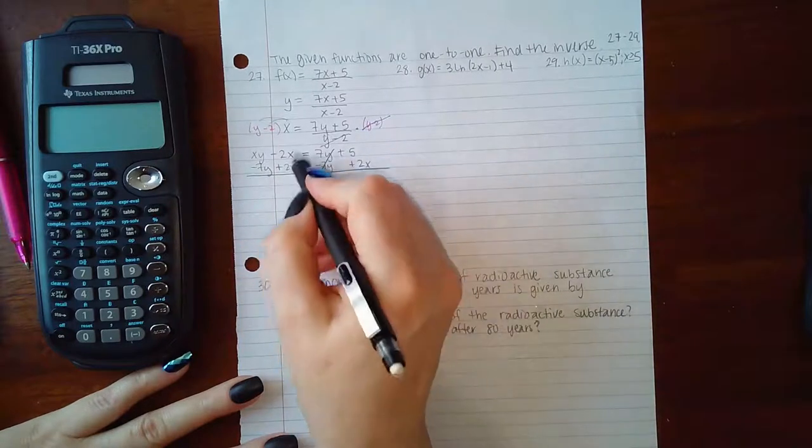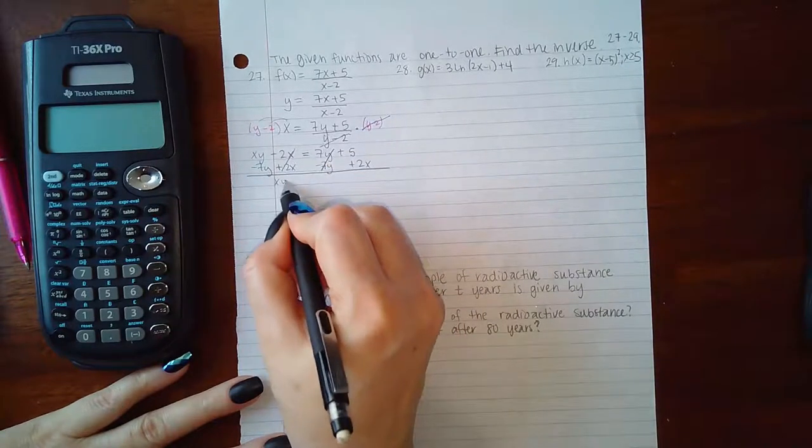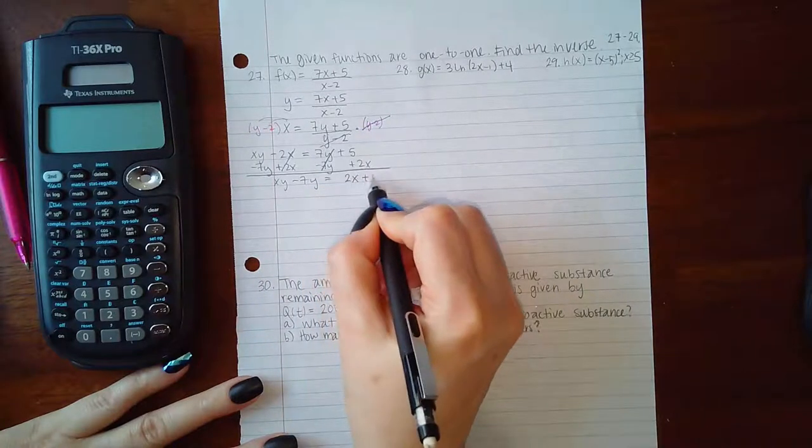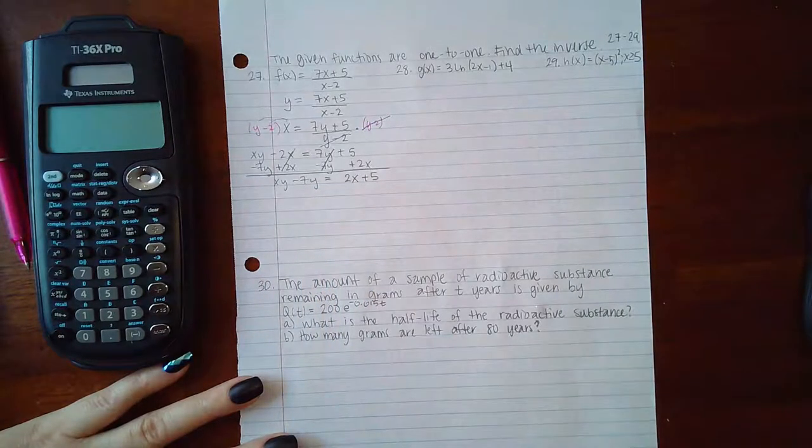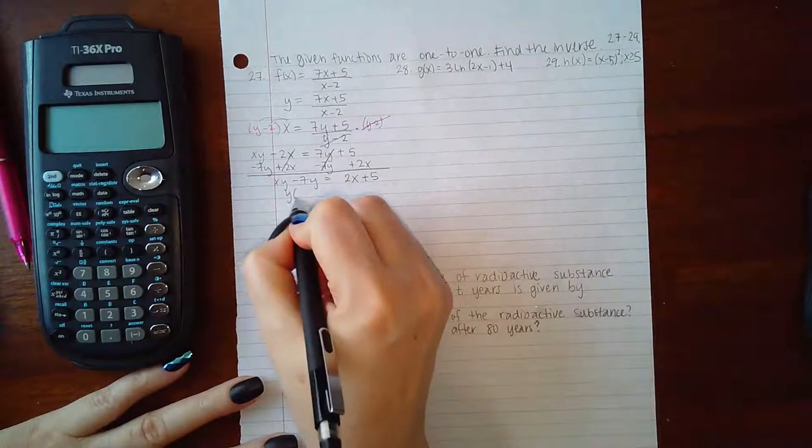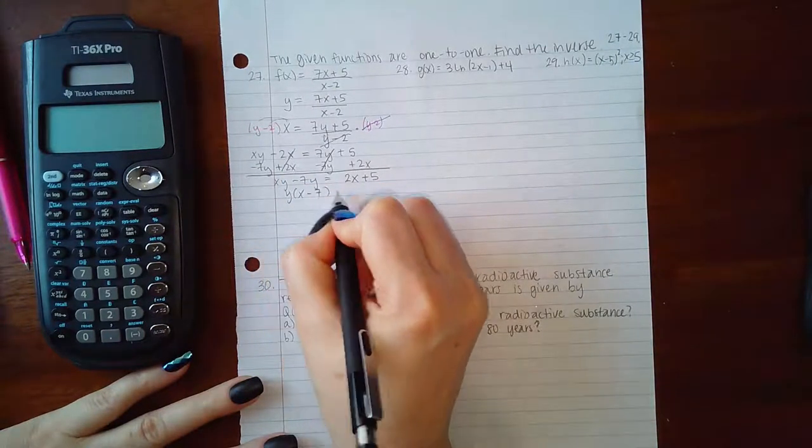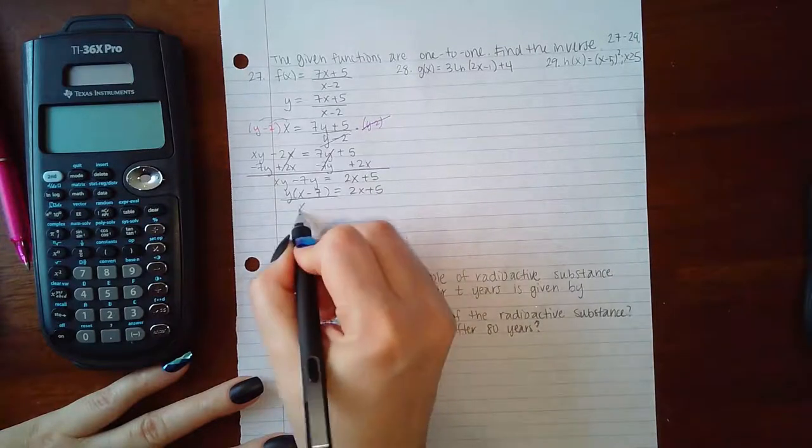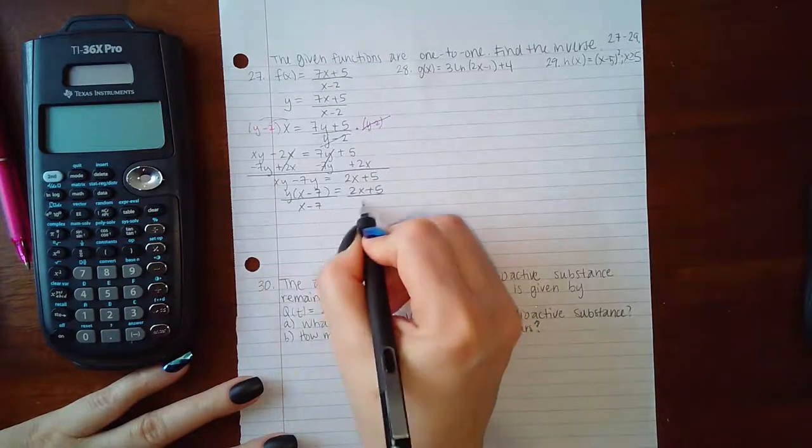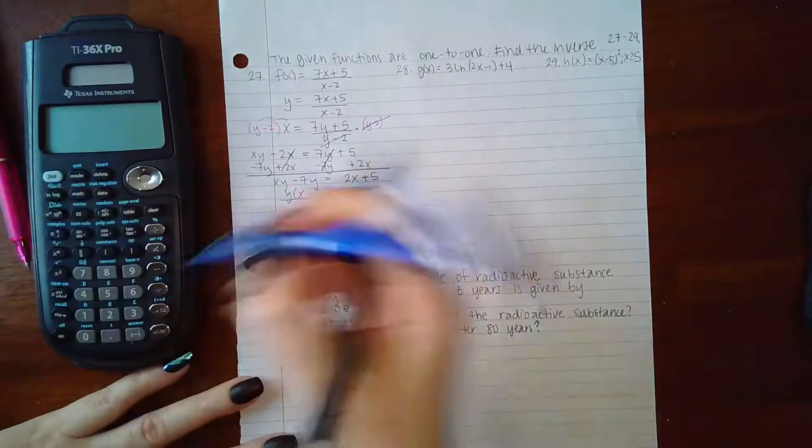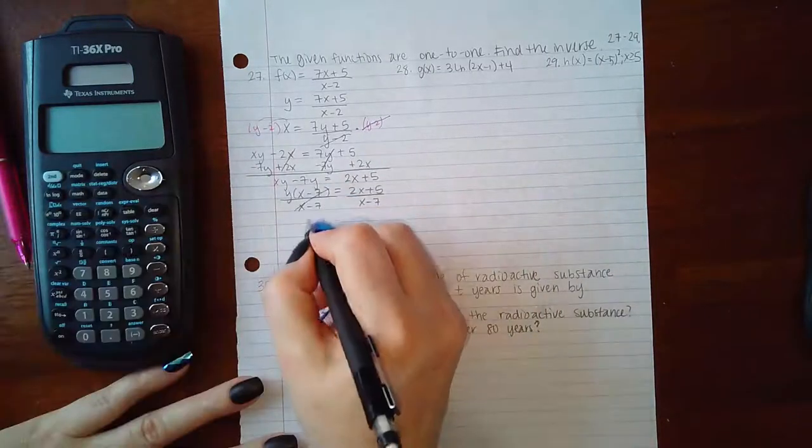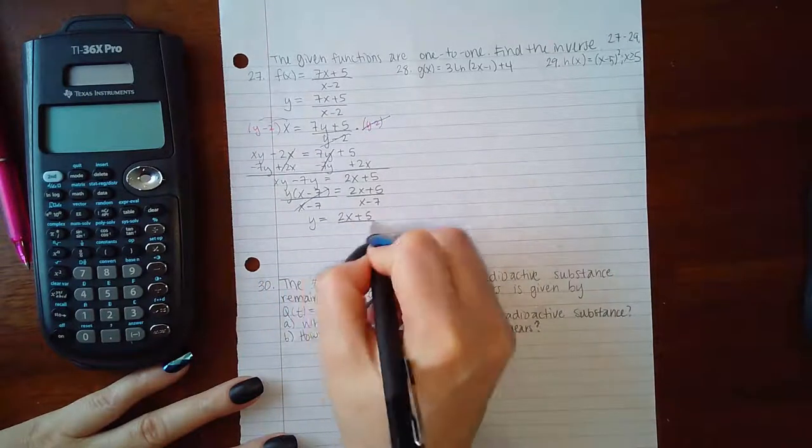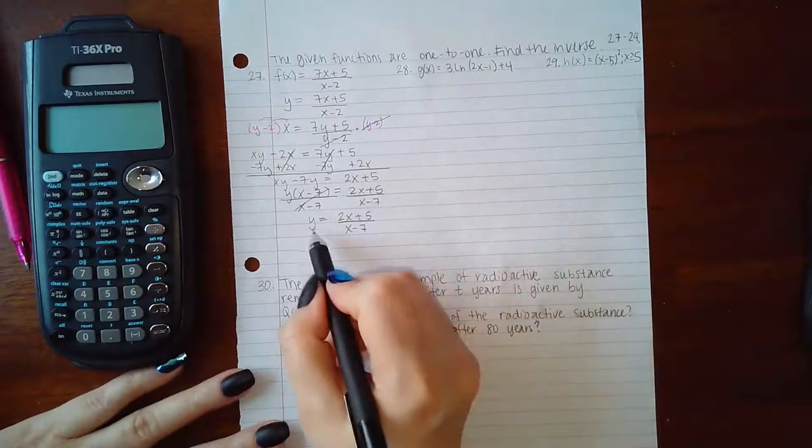So what I end up with is xy minus 7y equals 2x plus 5. Then I need to factor this y that they have in common out, and then finally I can get y by itself by dividing by that factor x minus 7. So they will reduce here and I'll have y equals (2x plus 5) over (x minus 7).